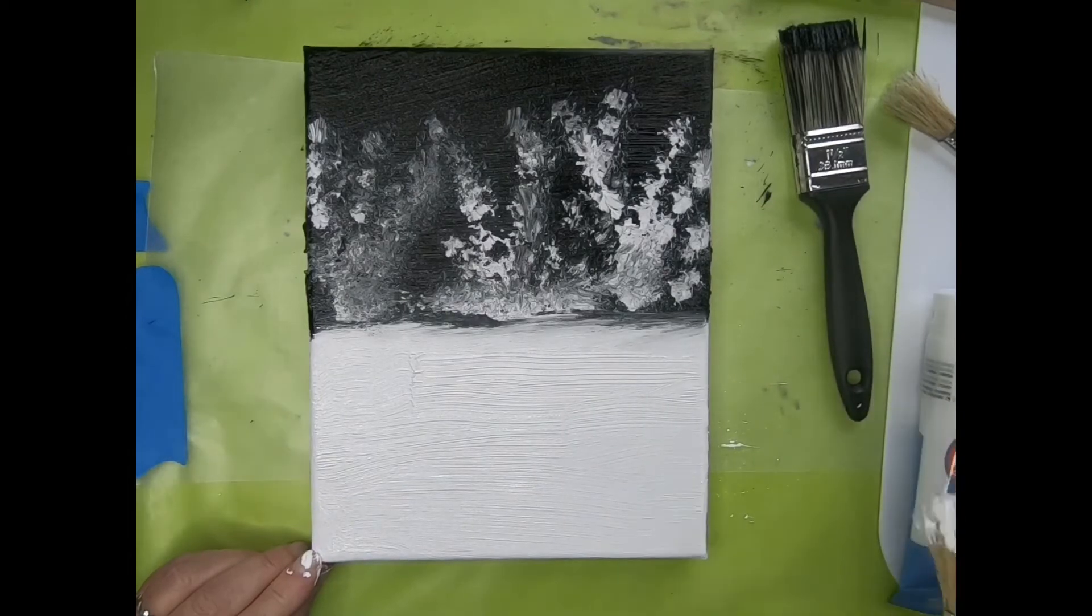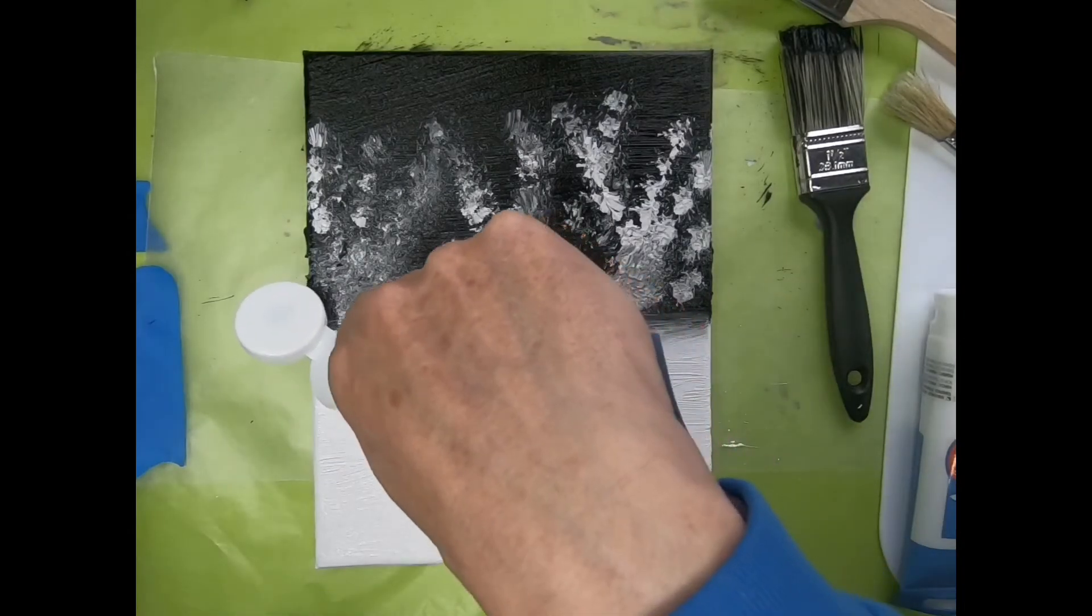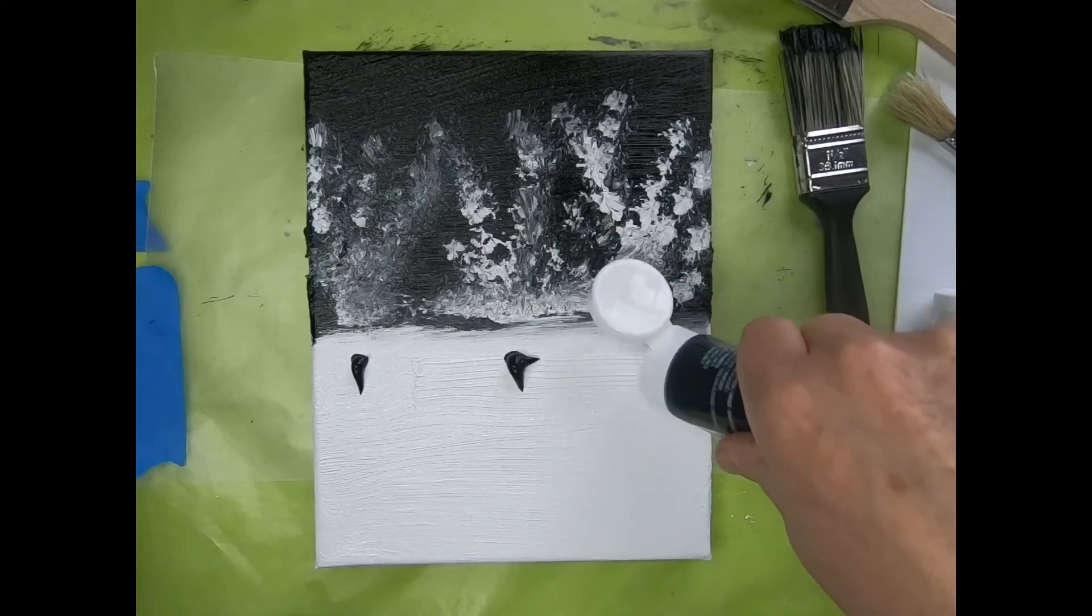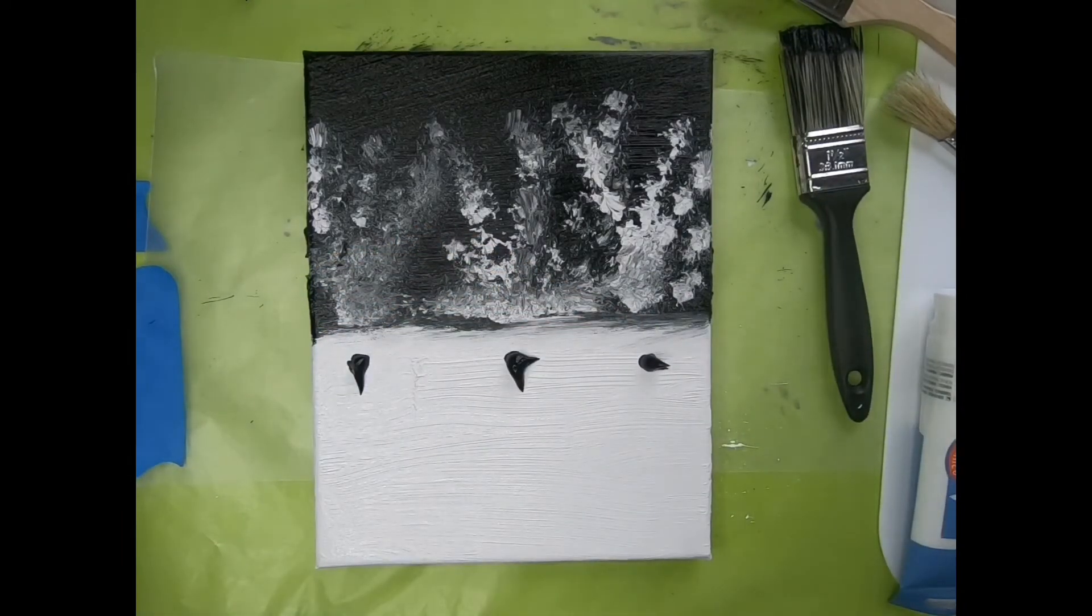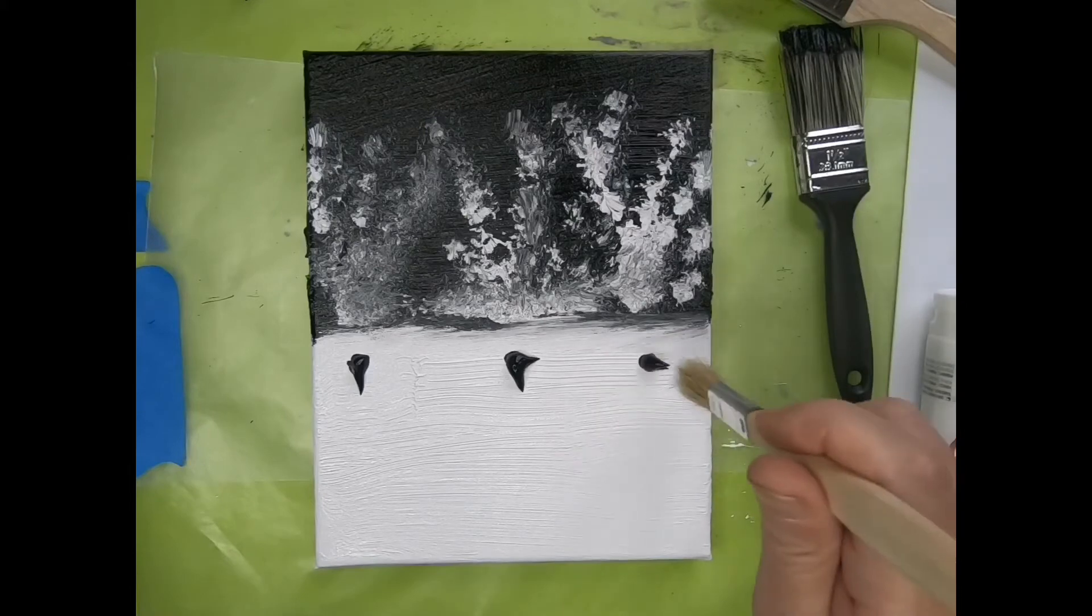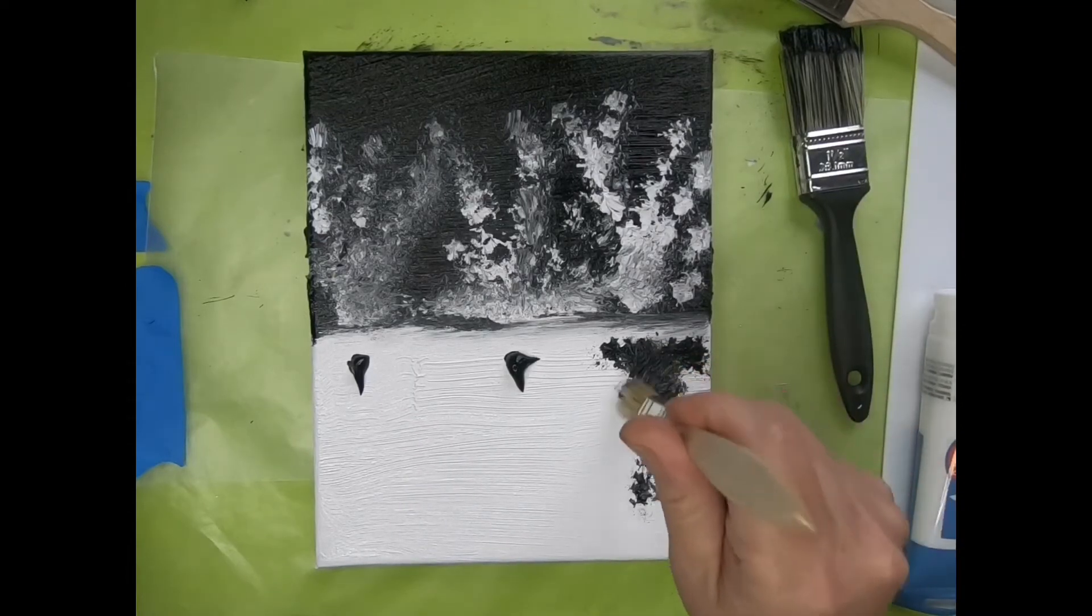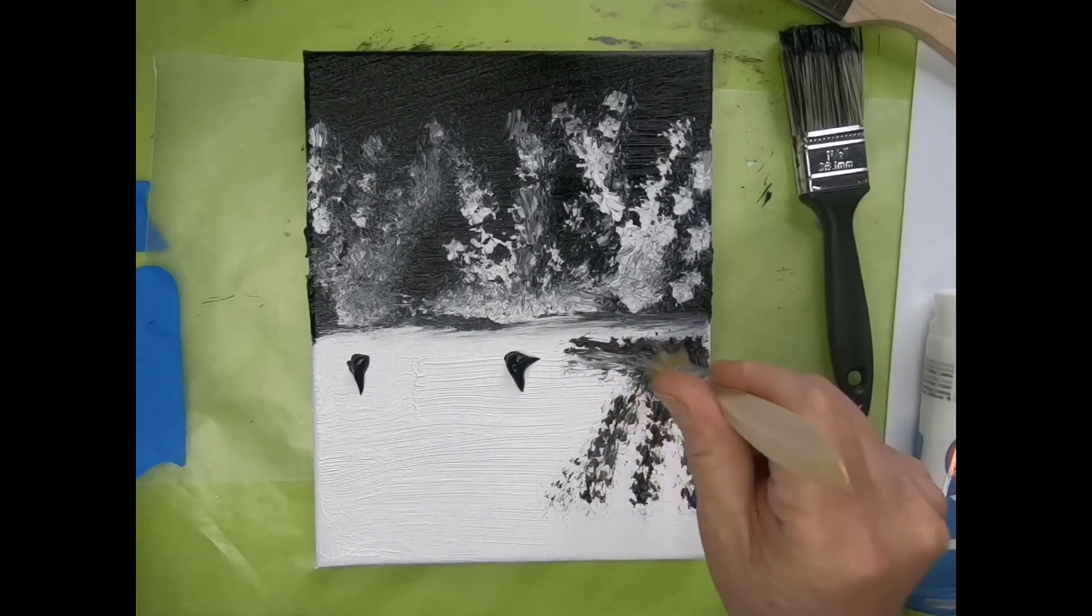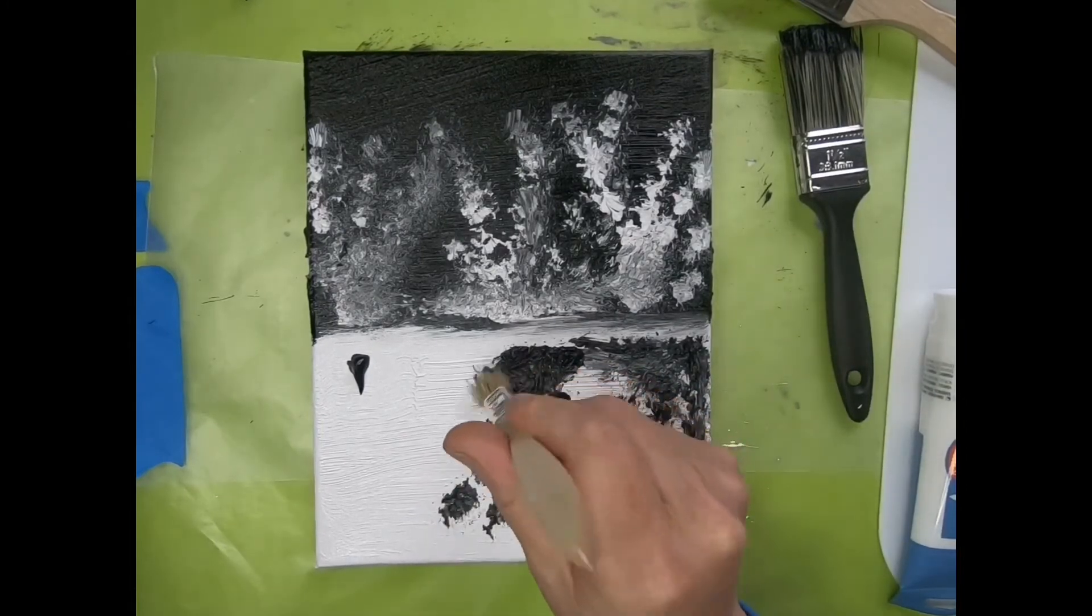And a little waterish looking color there. All right, now let's do the opposite. Let's put a dab of black. The black might go over too. All right, and take our other, let me get it right, take our other little half inch. All right, and then we're gonna do the same thing. We're just gonna kind of make some little tree looking things over here. Just gonna tap it in.